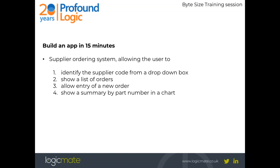What I'm going to show you is a supplier ordering system which consists of a few components. First, we'll identify a supplier code using a drop-down box, which will then generate a list of all open orders for that supplier. We'll have a screen to add a new order by selecting an item from another drop-down and entering a quantity and price. And we'll have a charting function giving a summary of all orders by quantity by part number.